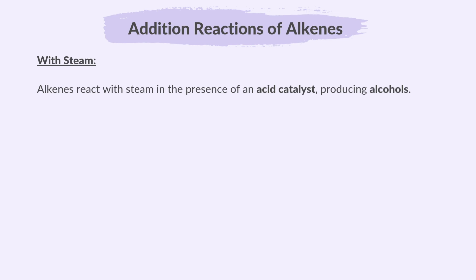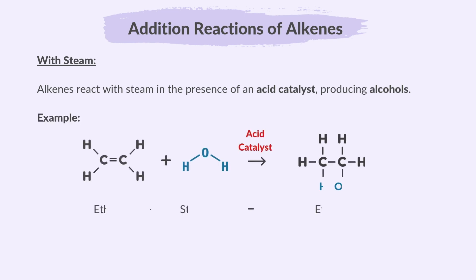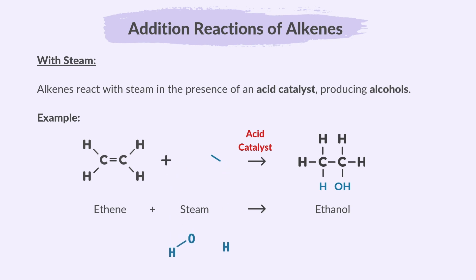Alkenes react with steam in the presence of an acid catalyst, producing alcohols. Steam is water in its vapour or gaseous form. For example, ethene reacts with steam to form ethanol. The water splits into H and OH.